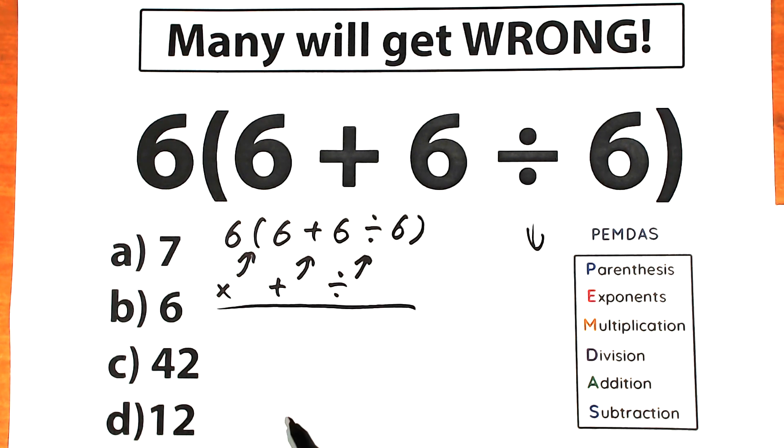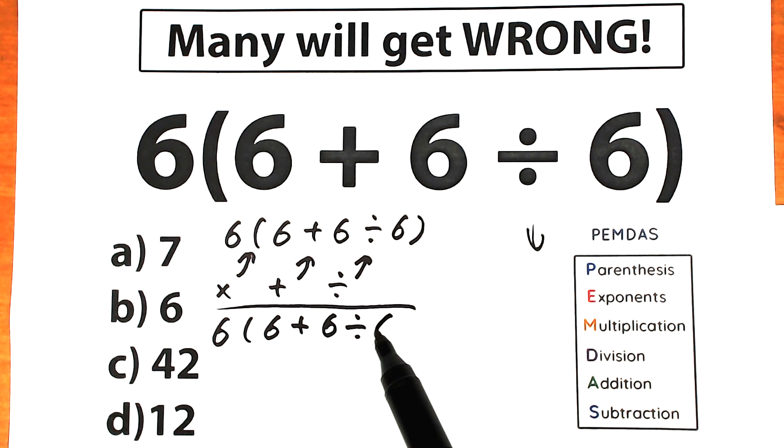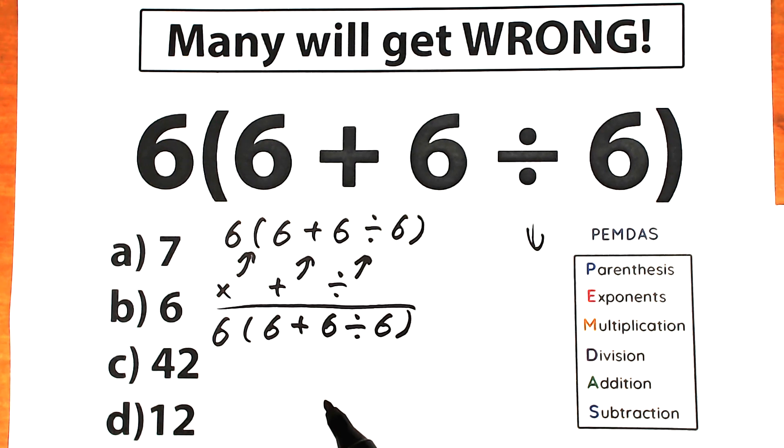So right now let's solve our challenge according to PEMDAS order of operation. Here is our challenge: 6 times 6 plus 6 divided by 6. Let's scan. What elements do we have? We have multiplication sign, we have addition sign, division sign and we have parentheses.